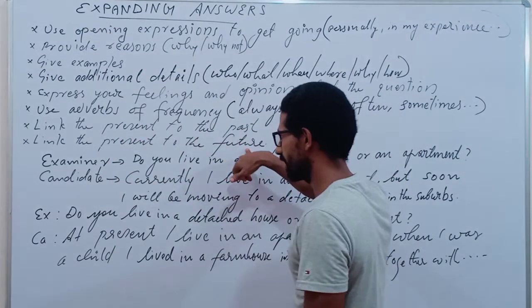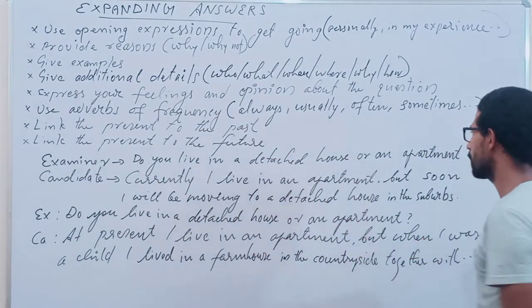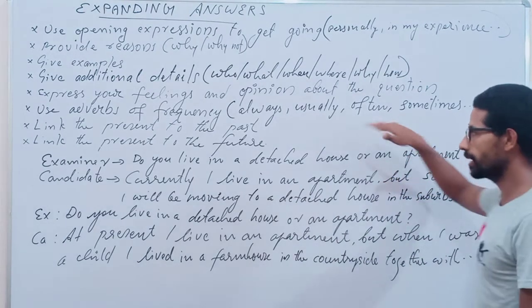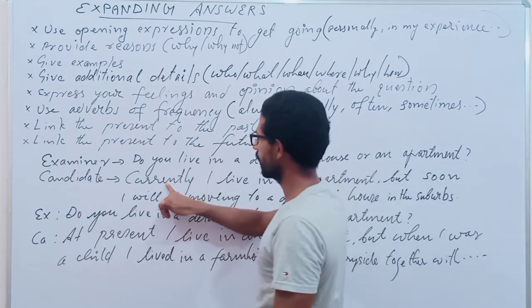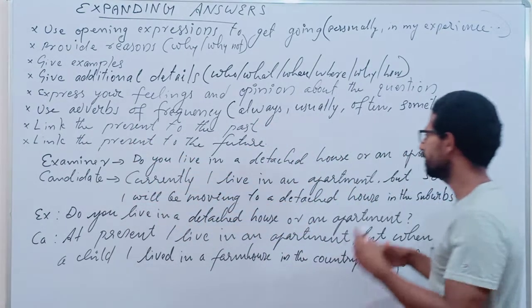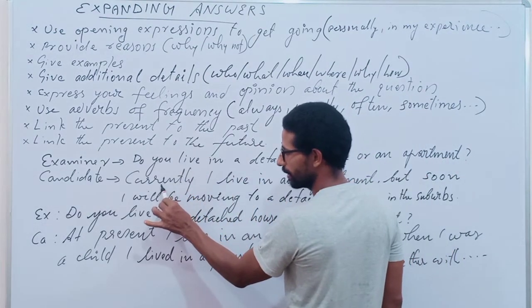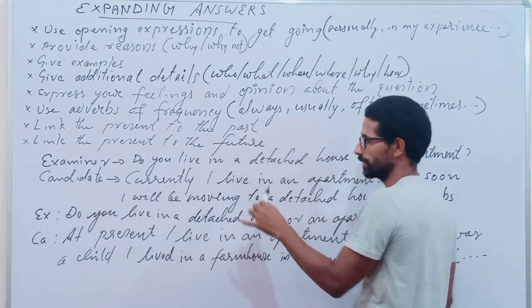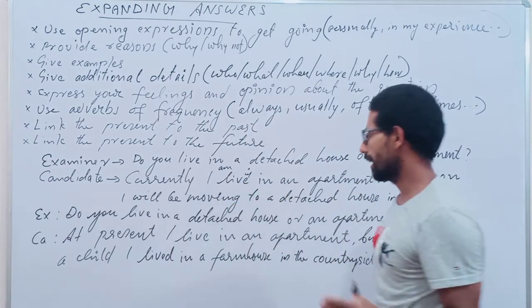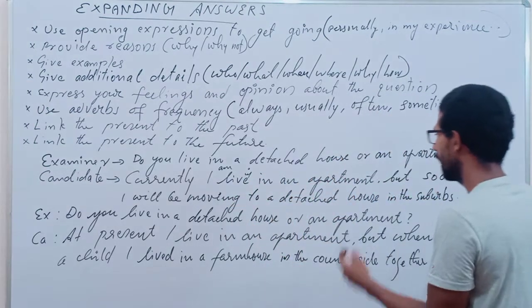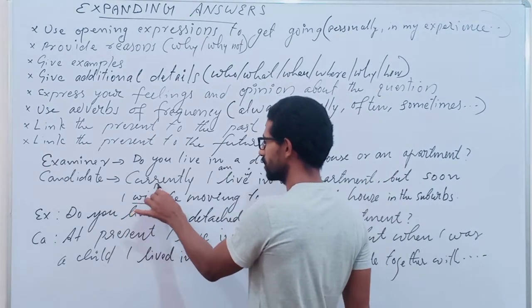Future. Example: Do you live in a detached house or an apartment? So currently means present. Currently I live in an apartment. So currently, it must come like this: I am living here. Currently I am living in an apartment, but soon I will be... currently present situation.